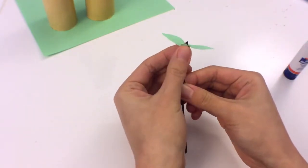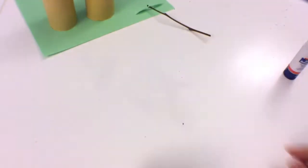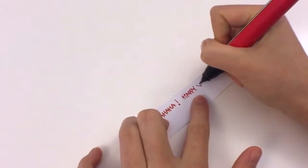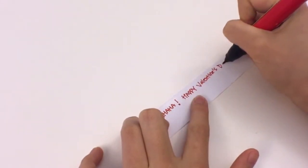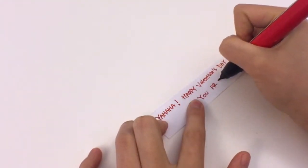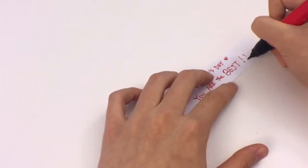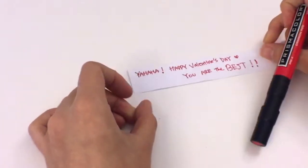Set that aside for now. And the last thing we need to prepare is just a very sweet message we're going to put into the Korok. I thought it would be cute to start the message with yahaha because that's what the Koroks always say. And now we are all ready for assembly.